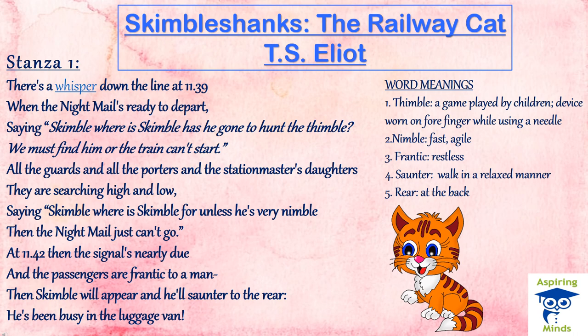The train is ready to depart but it cannot do so because everyone is waiting for Skimble Shanks, who will come and give the green signal. The passengers are speculating about where Skimble Shanks has possibly gone. The guards, the porters, and the station master's daughter — anyone present on the station — is awaiting his appearance. It is said that Skimble Shanks has gone to hunt for a thimble. The real meaning of thimble is a kind of party game in which one person hides a thimble and the other players look for it, or it is a device worn on the forefinger when doing needlework.